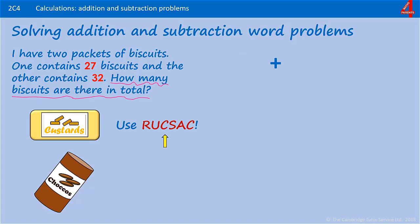The numbers we are adding together are 27 and 32. Now we need to solve this, and for this video we are going to use the partitioning method. If you are not sure about the partitioning method, there are some videos to help you with that as well.